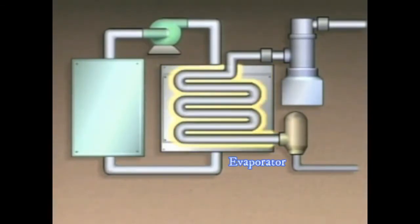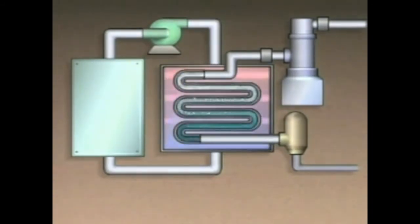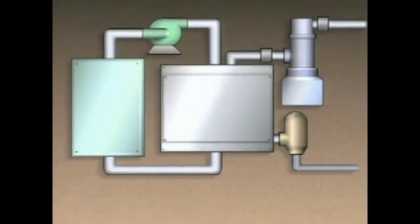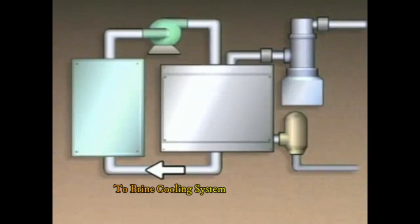In the evaporator, the brine acts as the heat source and its heat is absorbed by the refrigerant. As the refrigerant flows through the evaporator, it changes to a vapor. The refrigerant then flows on through the rest of the refrigeration system, while the cooled brine is directed back to the process equipment and the cycle continues.